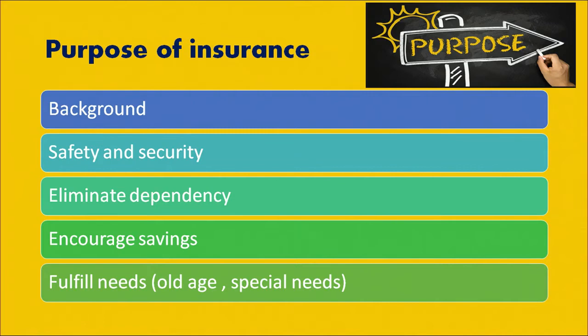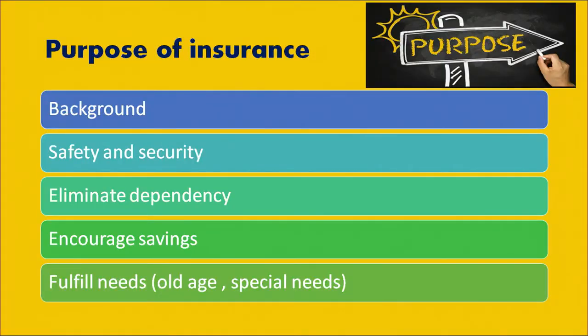Insurance was also evolved to encourage savings, because there would be many times when a corpus is needed for meeting special needs. The fulfillment of needs is another point where the insurance need is felt. Those needs could be anything across your lifespan — it could be childbirth, marriage, or higher education for your children. So during these landmark moments in your life, you also require some kind of budget set aside to take care of those contingencies.